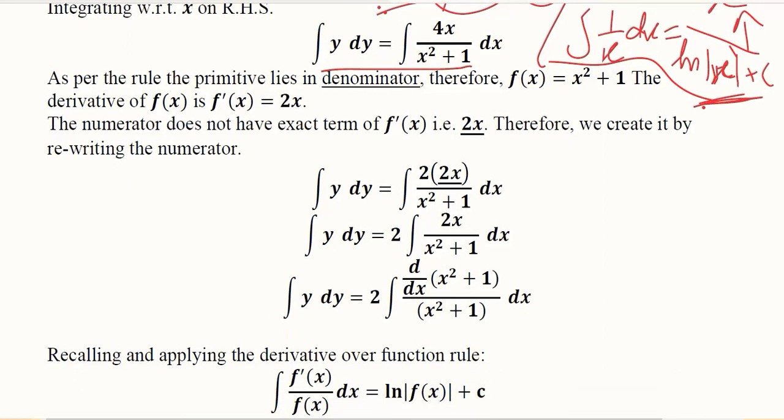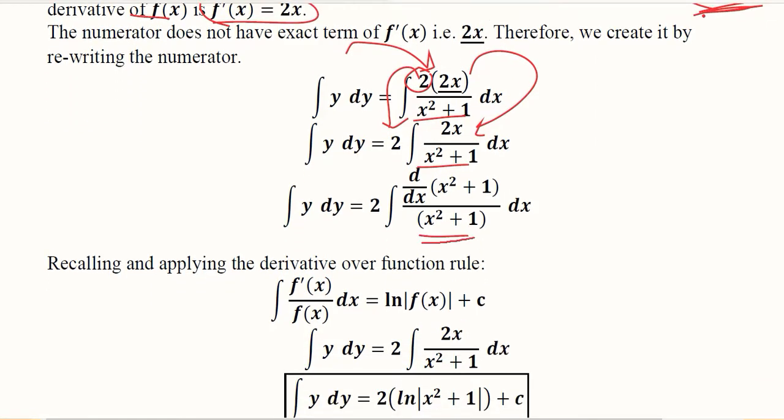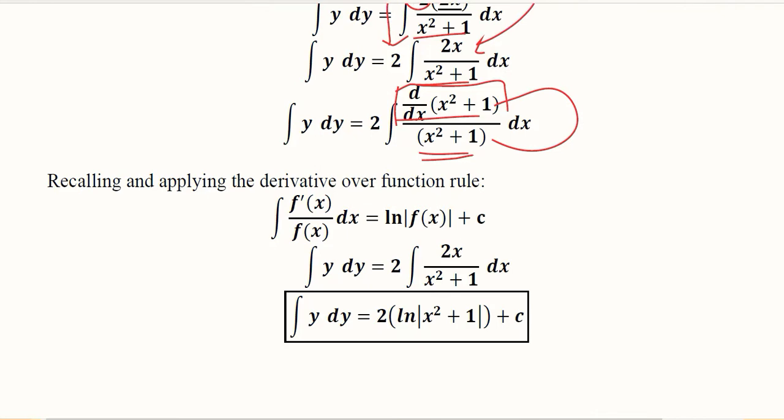We know that the function has the derivative equal to 2x and not 4x. This is why we divided this 4x into these two terms in the form of a product, and this 2 came out while 2x was left as well as the denominator. We have that situation where the function is in the denominator and its derivative is in the numerator, which is equal to 2x.